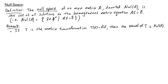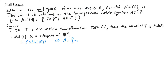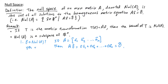The null space of A is itself a vector space, making it a subspace of Rn. For practice, let's check the three conditions to make sure it's a subspace. First, is the zero vector in the null space of A? If A has columns A1, A2, through An, then A times the zero vector equals the linear combination 0·A1 plus 0·A2 plus ... plus 0·An, which is the zero vector. So yes, the zero vector is in the null space of A.